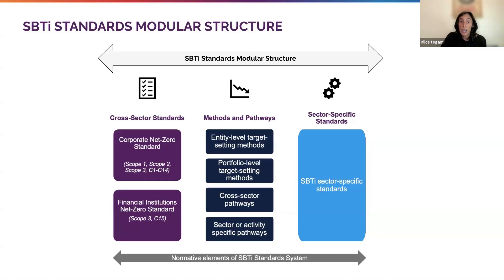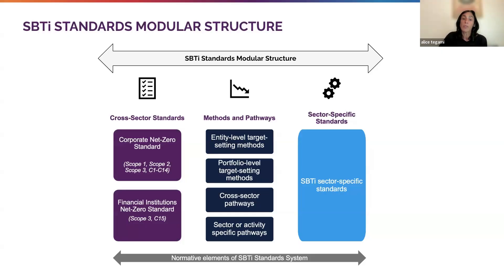Along with technical guidance on methods and pathways, all designed to work together to help companies reduce emissions in a consistent and coordinated way. The Corporate Net Zero Standard is currently undergoing a major revision, and both the Power and the Corporate Net Zero Standard updates are following the SBTI Standard Operating Procedure, which lays out an iterative drafting process including multiple public consultations. As the Corporate Net Zero Standard Version 2 draft is updated, the Power Sector Standard will be updated accordingly, ensuring the two draft standards are fully interoperable throughout the drafting process and upon their final publication.